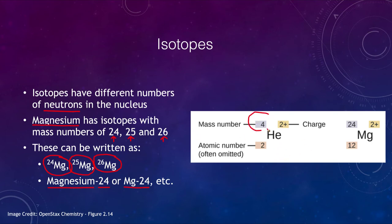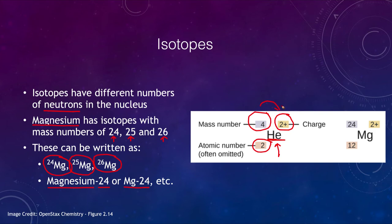We put the mass number to the upper left of the element symbol, the charge to the upper right, and the atomic number to the lower left. The atomic number is often omitted because knowing the element symbol tells us what it is. So helium has an atomic number of two — these two are always the same — but the mass number and ionic charge can vary depending on the isotope and ionic state. For example, magnesium has atomic number 12; looking at magnesium-24 with a plus two charge means it has lost two electrons.